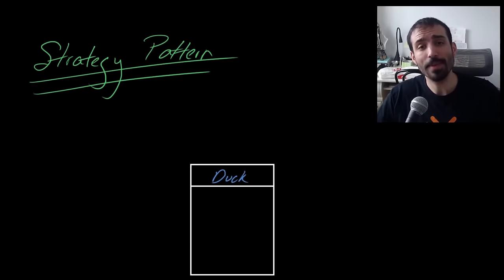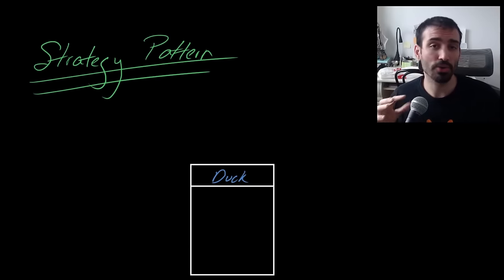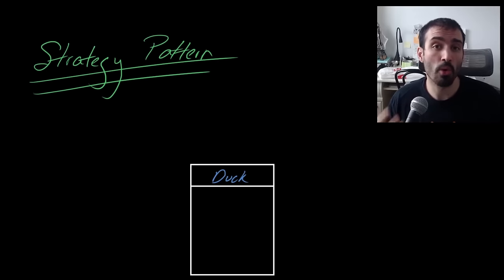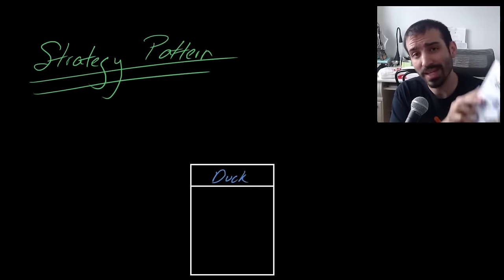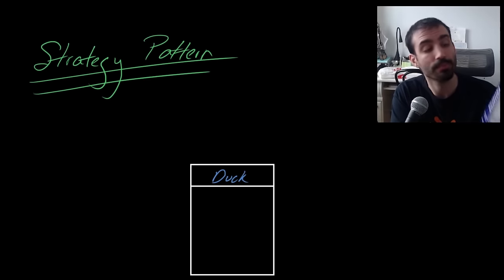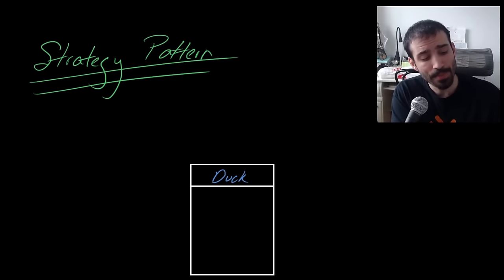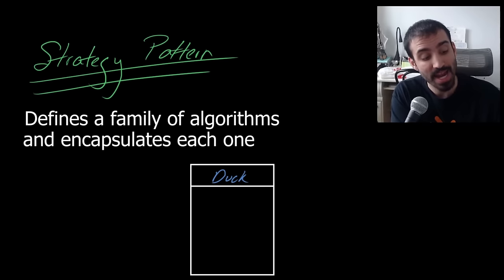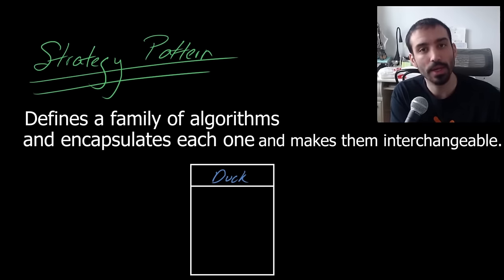The strategy pattern is a very useful pattern, not only in software development but also in system architecture as well. We won't get into the system architecture components in this video, but just know it's applicable to more than just software. So the definition from this book is as follows: the strategy pattern defines a family of algorithms, encapsulates each one, and makes them interchangeable.